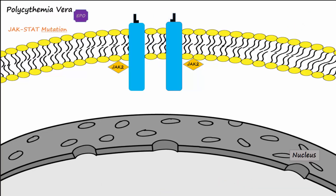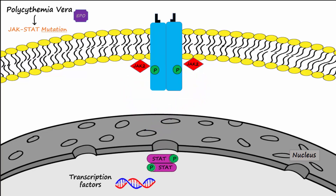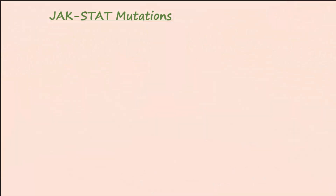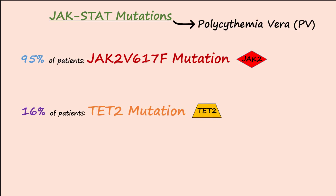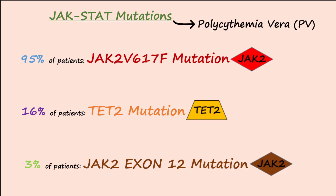In polycythemia vera (PV), there is a mutation in the JAK-2 gene which causes the JAK-2 tyrosine kinase to be active even without signaling from EPO. This causes excessive production of growth factors for RBC production and therefore increases the amounts of red blood cells. Different types of mutations in the JAK gene can lead to polycythemia vera. The most common is the JAK-2 V617F mutation, found in 95% of patients with PV. The TET2 mutation is found in 16% of patients, and the JAK-2 exon 12 mutation is rare, found in only 3% of patients. All of these mutations cause dysregulation of the JAK-STAT signaling pathway.